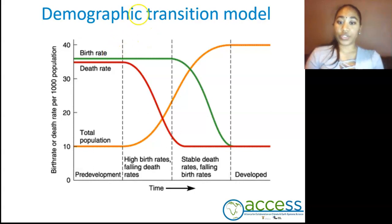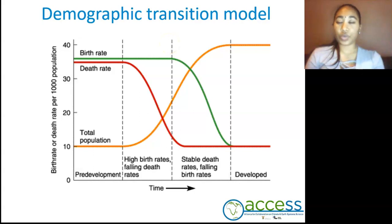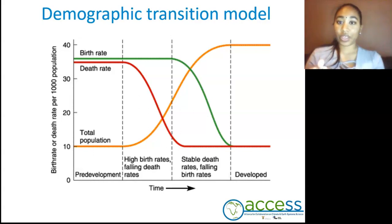As we move on into our transitional stage, we see a significant drop in the death rate. However, the birth rate remains high as a means to compensate for the death rates. This was a period which saw the introduction to medical facilities, proper sanitation, and agricultural production. We then move on to our industrialized stage, in which we see a significant drop in the birth rate as well. This was a period which saw the introduction to education, family planning, women with an economic status, improvement in technology, and rapid economic growth.